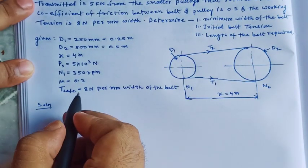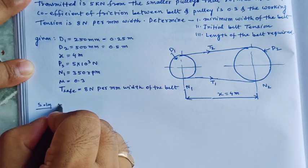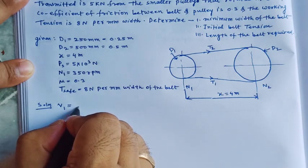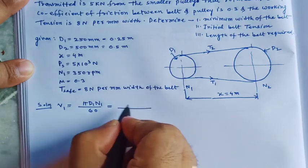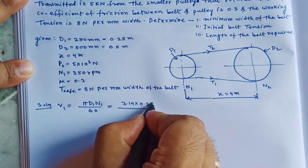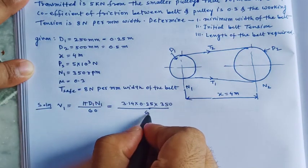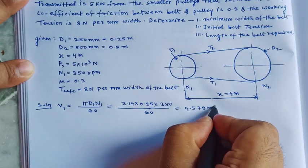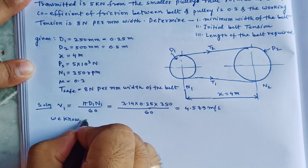First of all, we have to calculate the linear velocity of the driver pulley, that is v1. This value is π × d1 × n1 divided by 60, which is 3.14 × 0.25 × 350 divided by 60. So this value will be 4.579 meter per second.